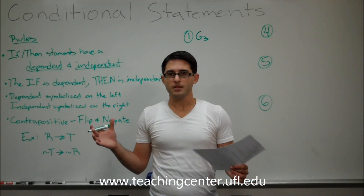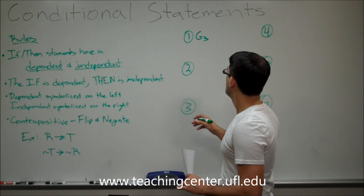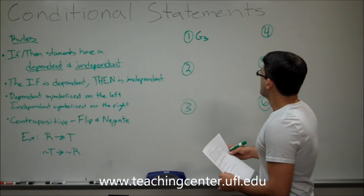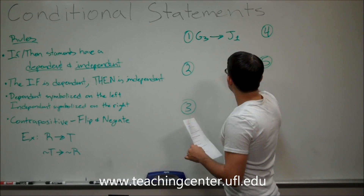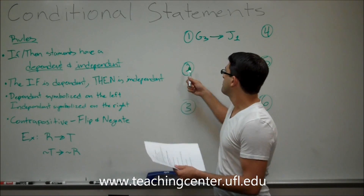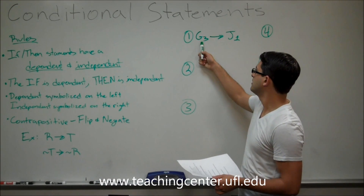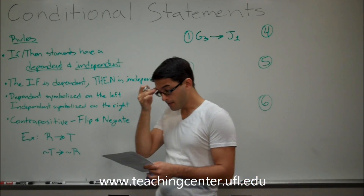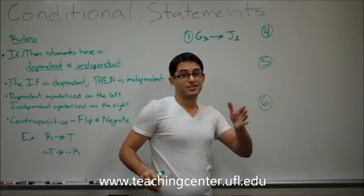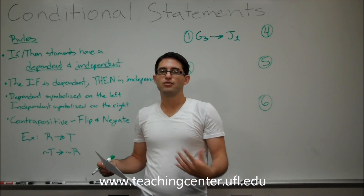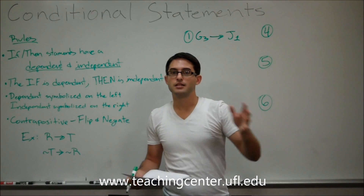You don't want a really long sentence-type symbol — you want something neat and small so you can go back to it and interpret it quickly. So G3 is the if statement, and then Jasmine finishes first is the then statement — J1. You can see how Gerald finishing third is dependent on Jasmine finishing first, because if Jasmine does not finish first, then Gerald cannot finish third. If Gerald finishes third, then Jasmine finishes first. So if Jasmine is second, third, or fourth, you know Gerald could not have finished third.